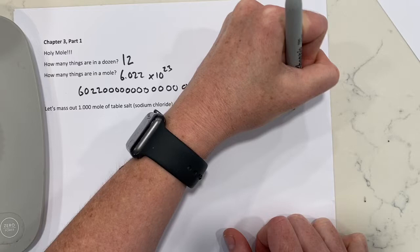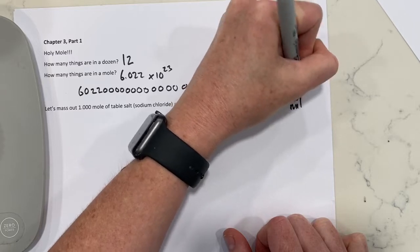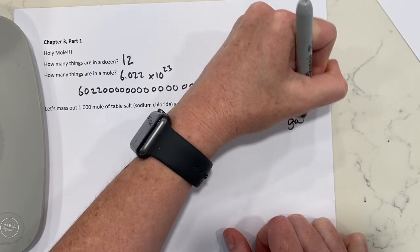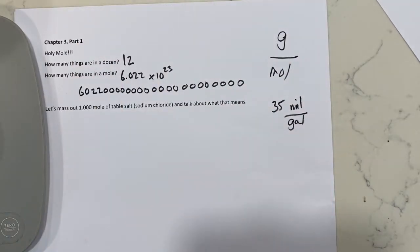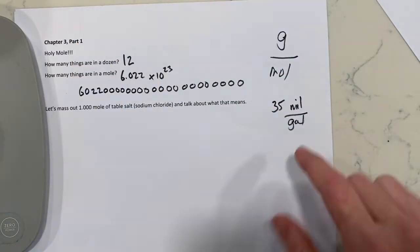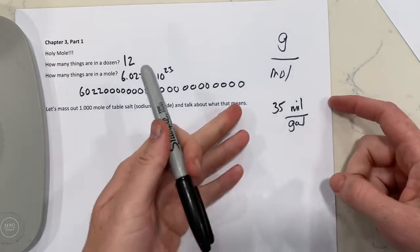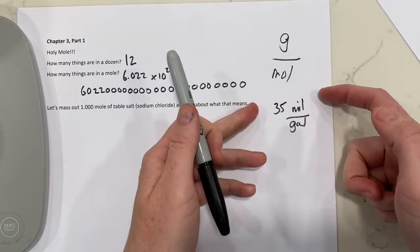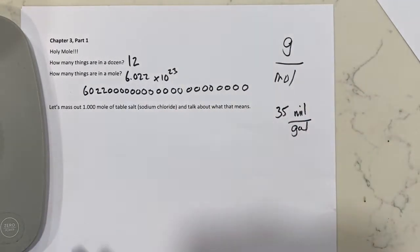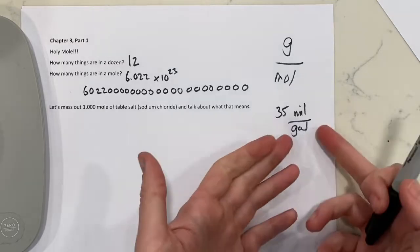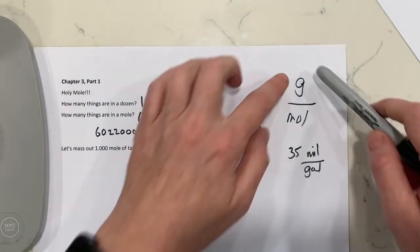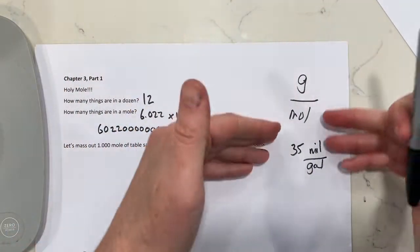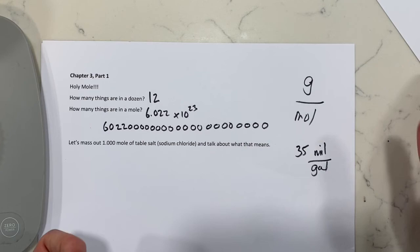If I get 35 miles to the gallon in my car, and I have a gallon of gas, I can go 35 miles. If I go 35 miles, I've used 1 gallon. So grams per mole tells you the amount of grams in a mole — if I've got a mole, I've got that many grams.